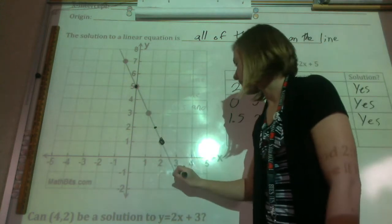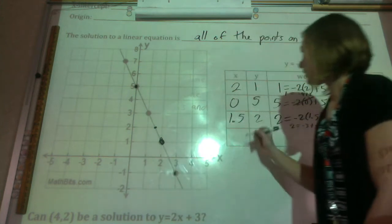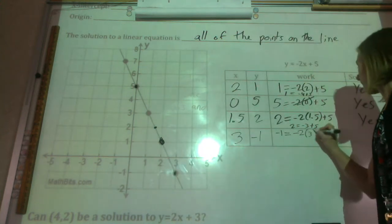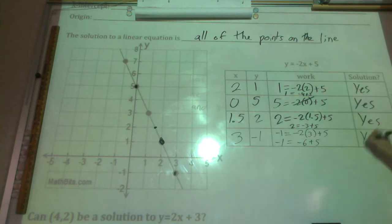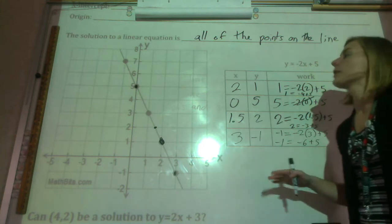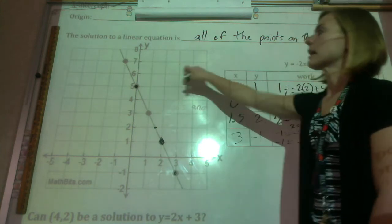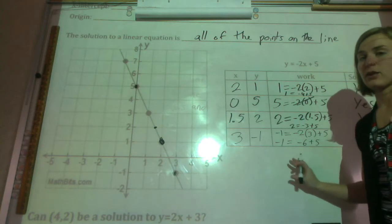So let's do one more. How about this one down here? (3, -1). And vice versa, if we've picked a point that wasn't on the line, then it won't work in the equation.